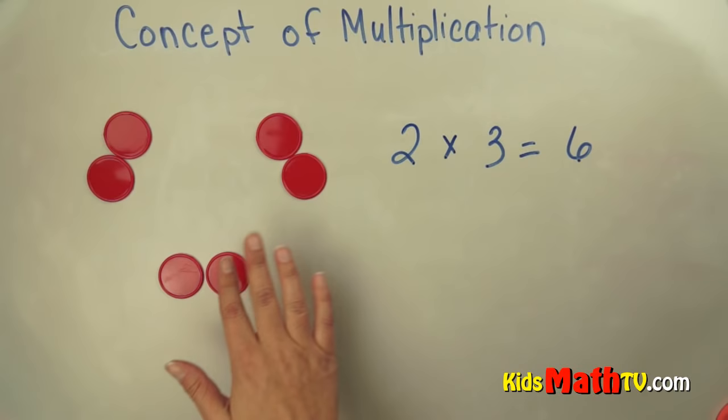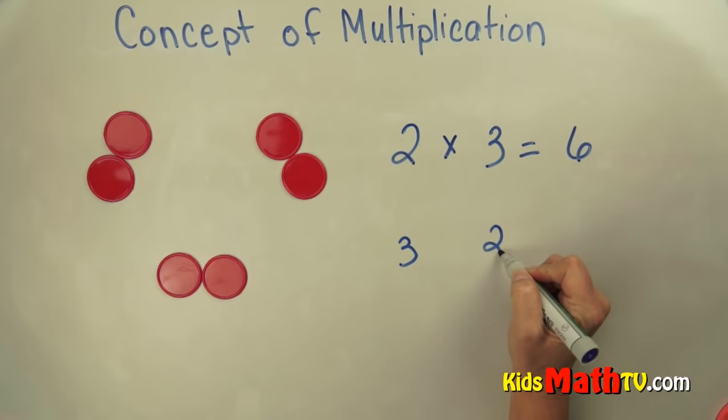So here now I have three groups, but there's two in each group. So I have three groups with two in each group. And there are still 1, 2, 3, 4, 5, 6 all together.